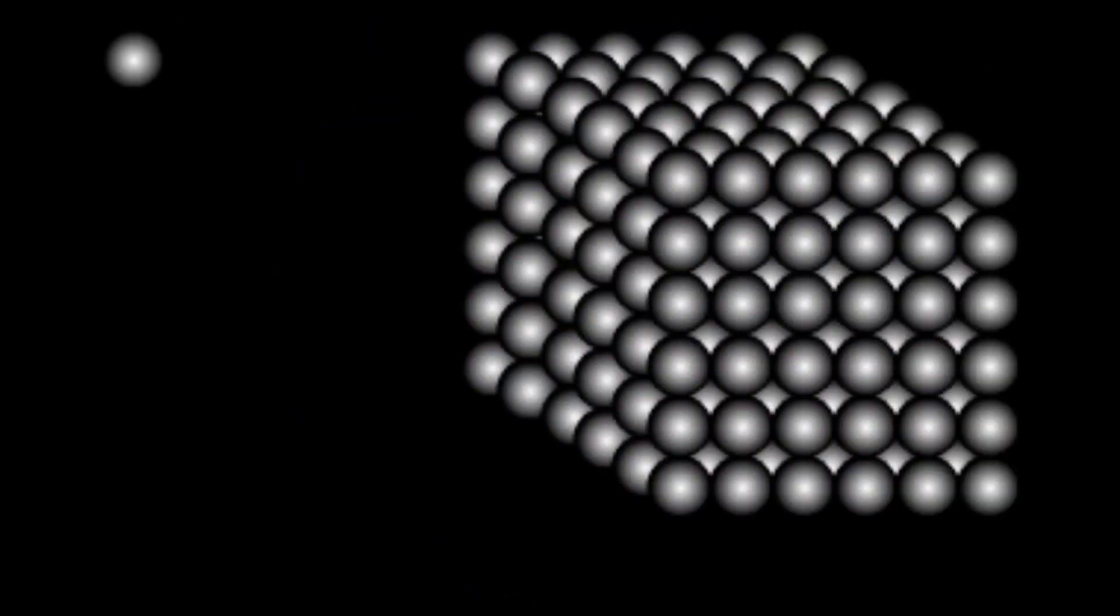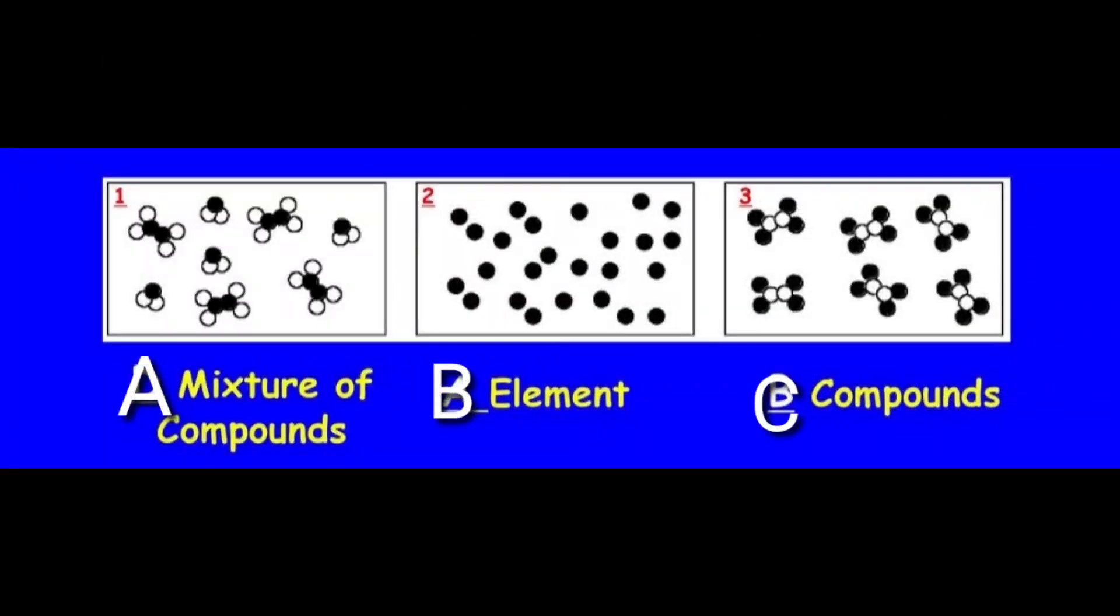If we combine element A and element B, then the compound we get is element C. Element A is made up of many atoms and element B is made up of many different atoms. When the atoms of element A and element B combine, the compound that we get contains the atoms of both elements.